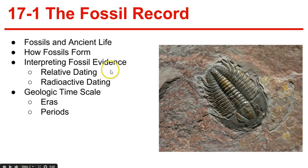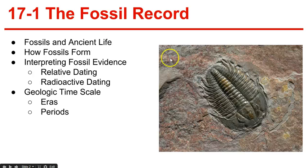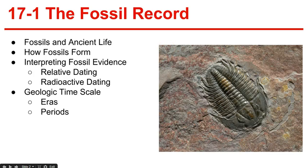Interpreting fossil evidence: relative dating. Relative dating is when the age of a fossil is determined by comparing its placement with that of other fossils in the layers of rock. Rock layers form in order of age, oldest on the bottom and newest on top. Index fossils are helpful in relative dating — they are easily recognized, existed for a short period of time, but have a wide geographical range, found in only a few layers of rock but many different geographic locations. Relative dating allows paleontologists to estimate a fossil's age compared with other fossils, but does not provide information about its age in years.